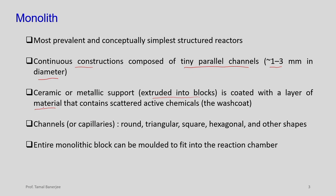The metallic support is coated with a layer of material that has active ingredients dispersed in it - this is called the wash coat. This forms channels or capillaries which may be round, triangular, square, hexagonal or other shapes. Depending upon your application you may have different shapes.